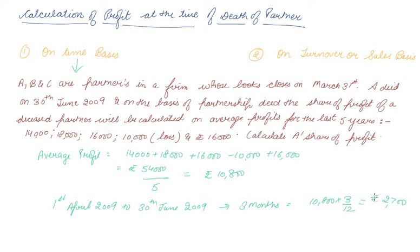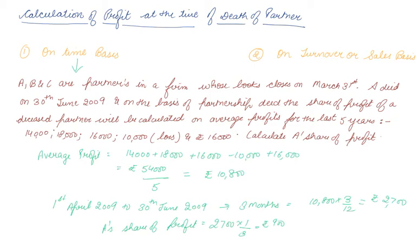That 2,700 is the total firm profit for the period. Since nothing else is specified, it is assumed that A, B, and C are equal partners, so A's share is one-third. Therefore A's share of profit will be one-third of 2,700, which is rupees 900. The journal entry to be passed is: Profit and Loss Suspense Account — debit; to A's Capital Account — credit, by rupees 900.